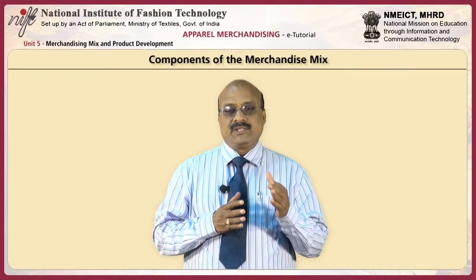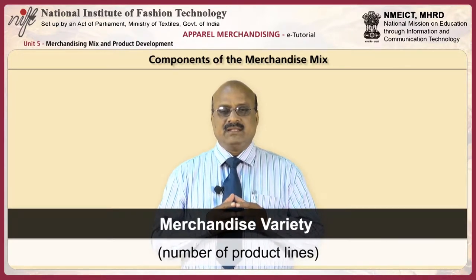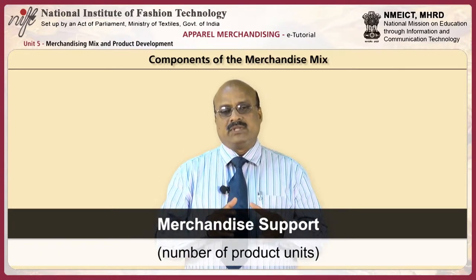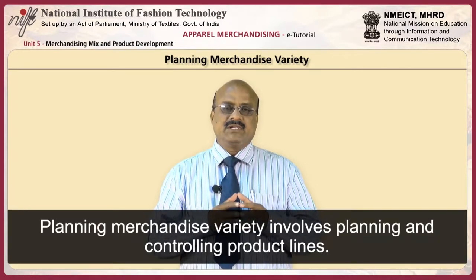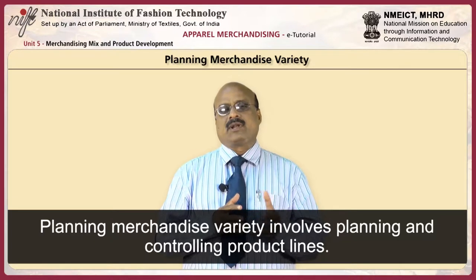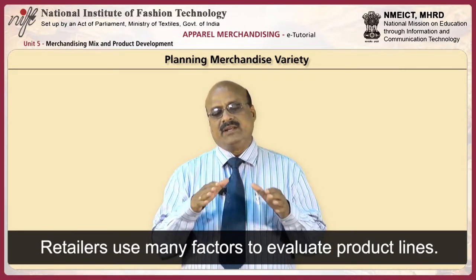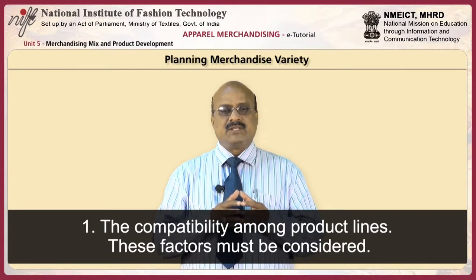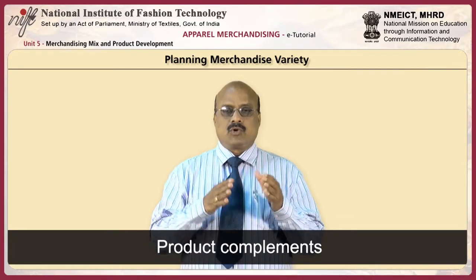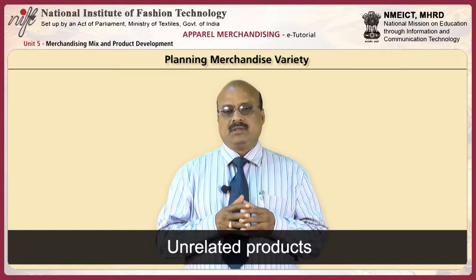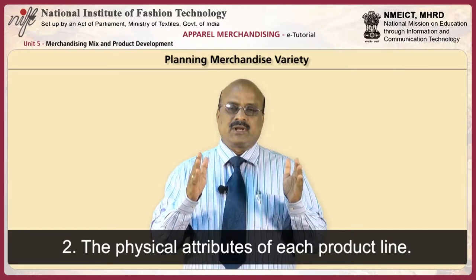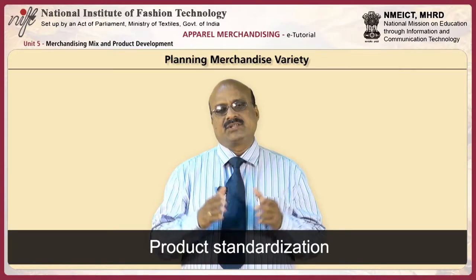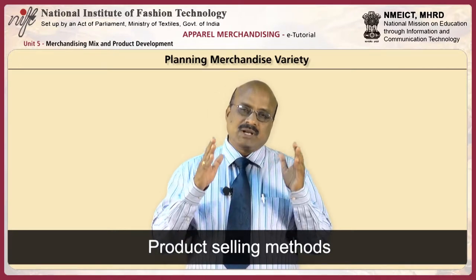The components of the merchandise mix comprise merchandise variety — the number of product lines; merchandise assortment — number of product items; and merchandise support — the number of product units. Planning merchandise variety involves planning and controlling product lines. Retailers use many factors to evaluate product lines: compatibility among product lines, product substitutes, product complements, unrelated products; physical attributes such as product bulk, product standardization, product service levels, and product selling methods.